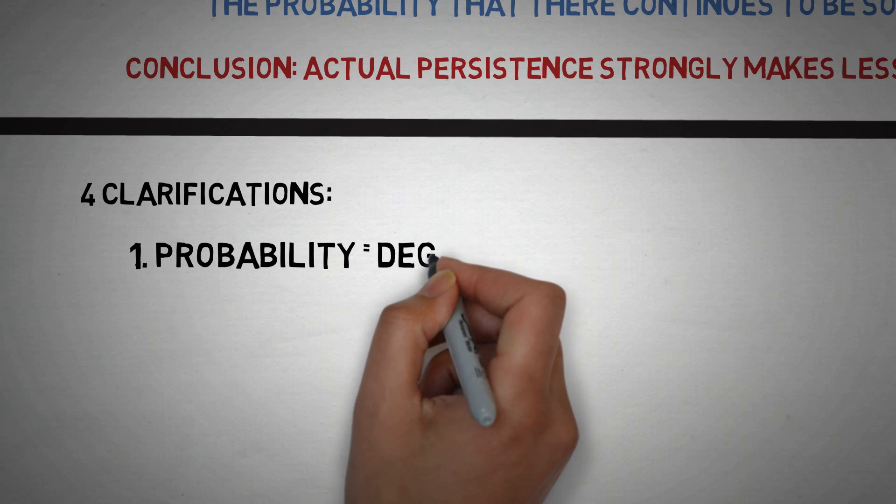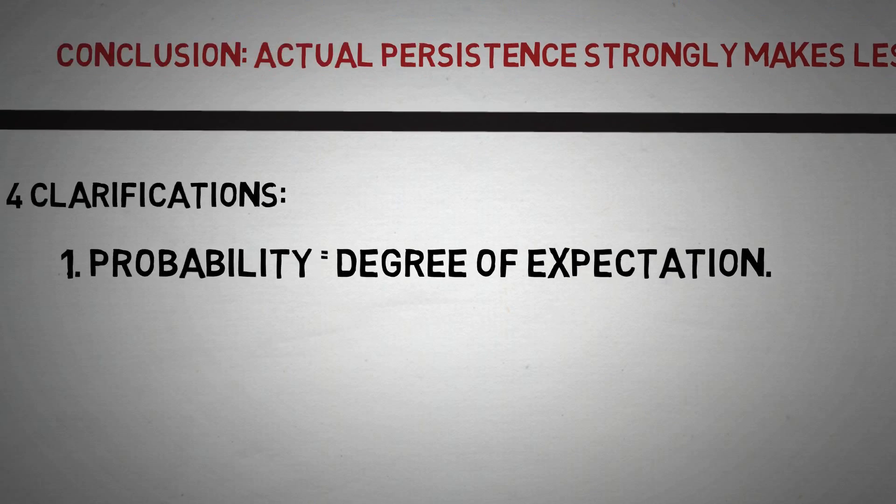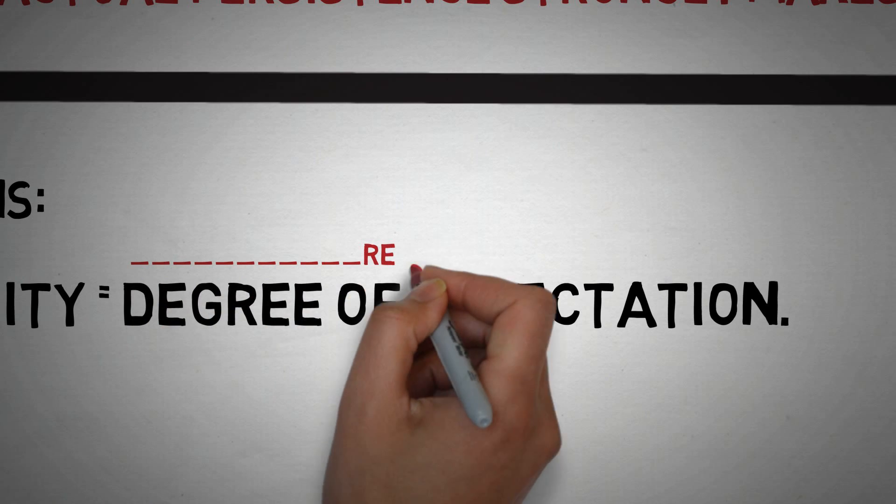First, we can think of probabilities in terms of degree of expectation. Philosophers sometimes call this epistemic probability, which means reasonable degree of expectation.